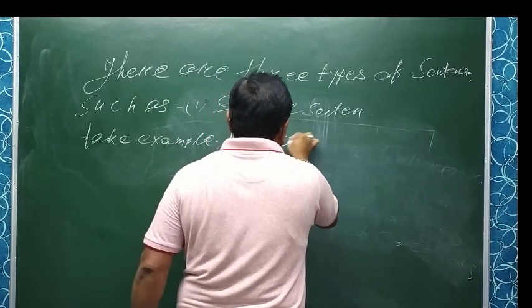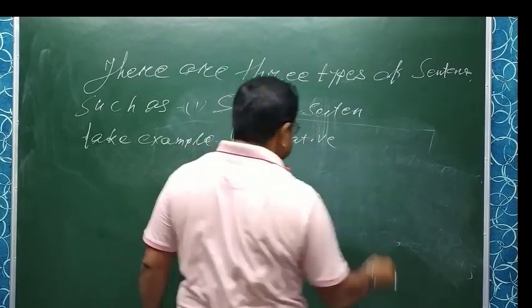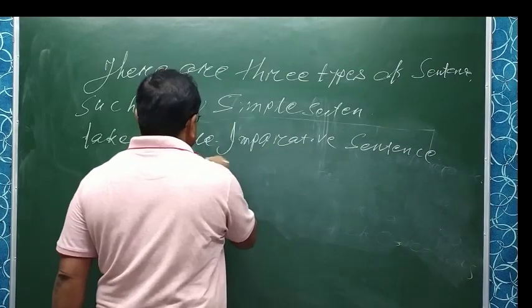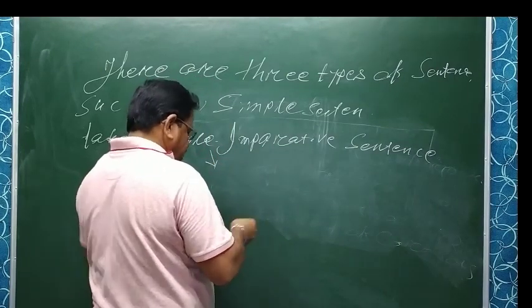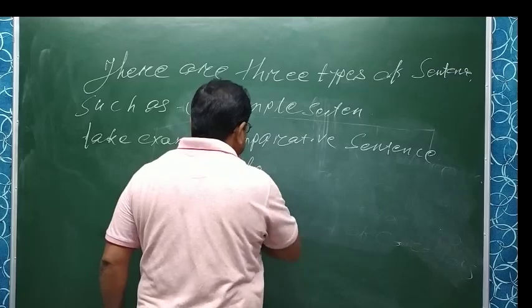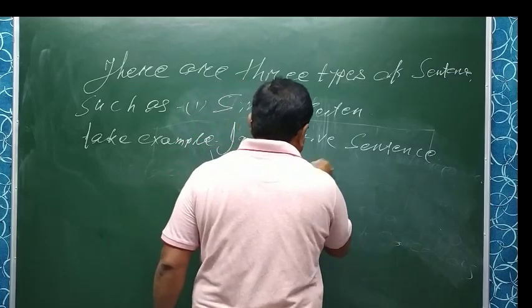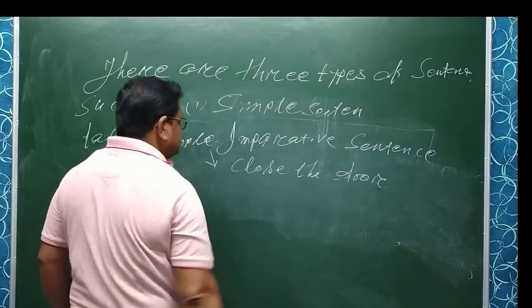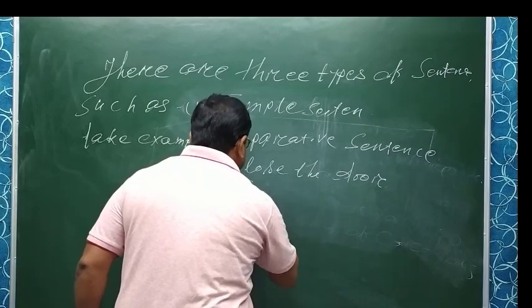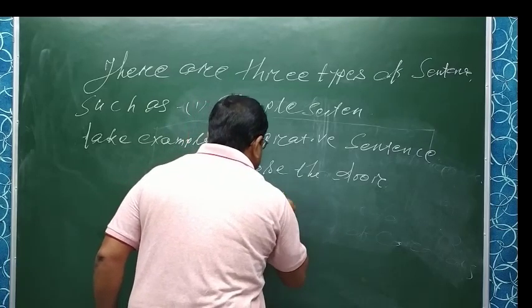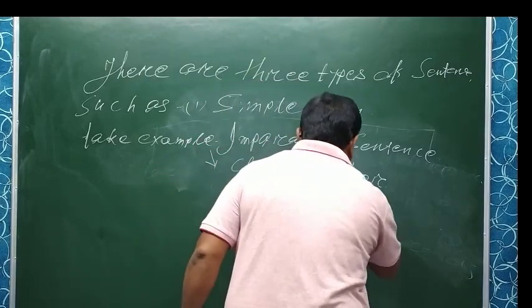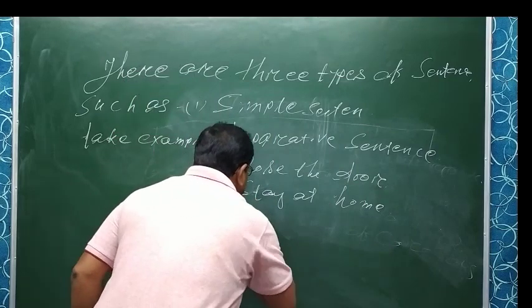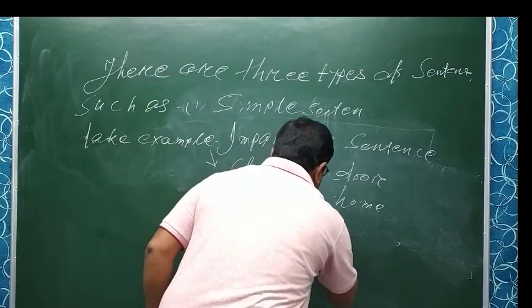Imperative sentences. Examples: 'Close the door.' 'Stay at home.' 'Go outside.'